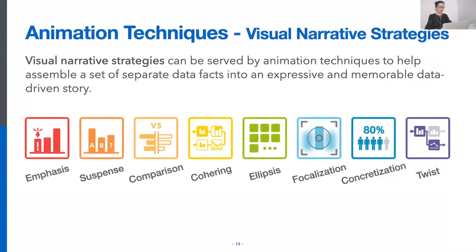On the other hand, we categorized animation techniques by their visual narrative strategies. Such strategies can help assemble a set of separate data facts into an expressive and memorable data-driven story. We identified eight categories of narrative strategies: emphasis, suspense, comparison, coherence, ellipsis, vocalization, concretization, and twist.